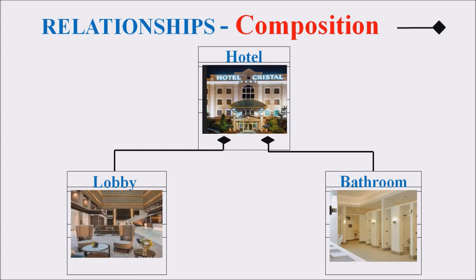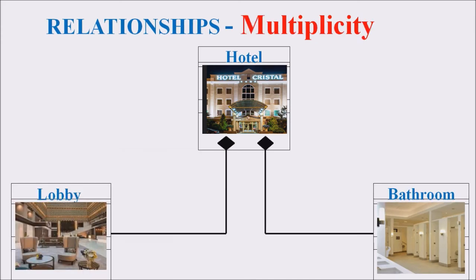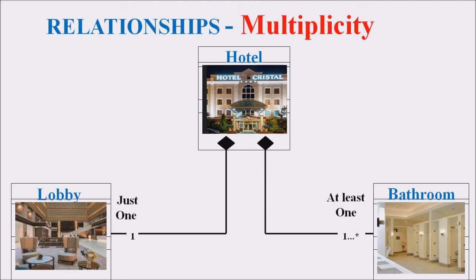Composition means one class is dependent upon another — without that particular class, the subclass does not exist. Next is the term multiplicity, which is related to composition. A hotel has a lobby and a hotel has a bathroom. Multiplicity means the total number of instances of a particular class or object. A hotel must have one lobby, and it has at least one bathroom — meaning one to many bathrooms. This numbering is represented using the multiplicity factor. Beside the Lobby class we mention one, and beside the Bathroom class we mention one to many.